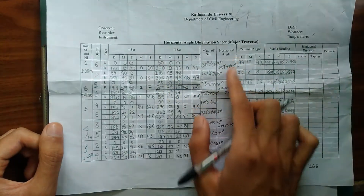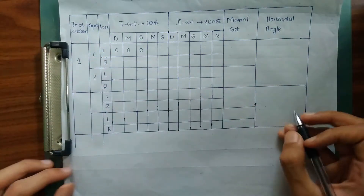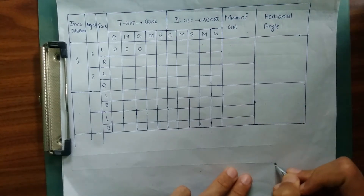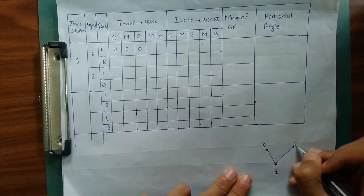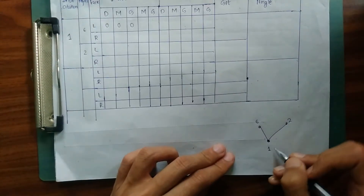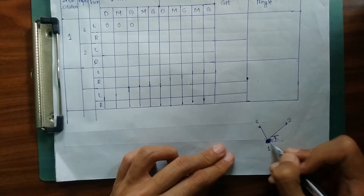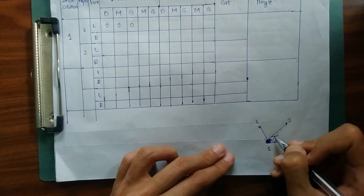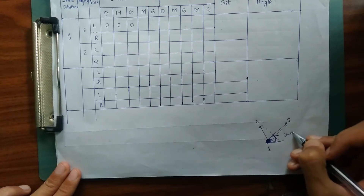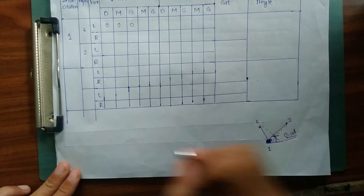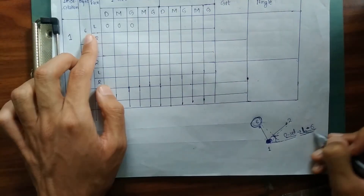I am going to use this set of data. We have our instrument station 1, and right now I am sighting at instrument station 6 and instrument station 2. I have placed my theodolite over instrument station 1. On top of instrument station 1 I have my theodolite, and right now I am sighting at my instrument station 2, setting 0. I have done the 0-set for my face left condition for station 6.